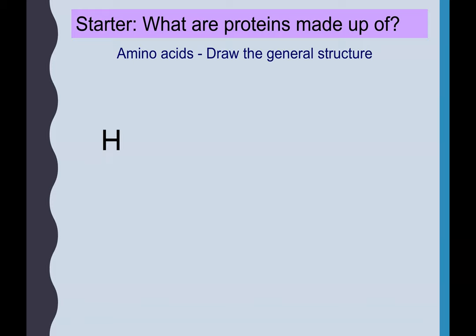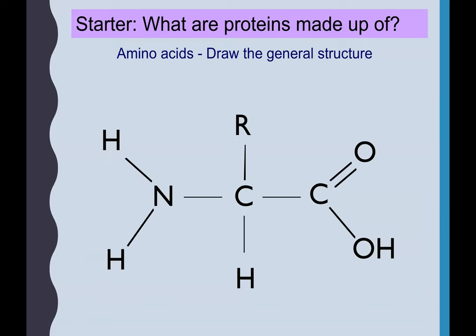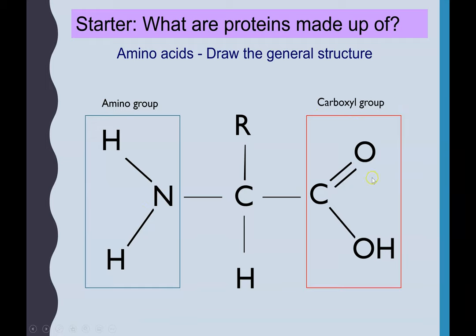If you haven't already learned it, here's the structure. We have a central carbon with four different groups coming off. So we're going to split it into those four to help you remember. Over here we have the amino group, sometimes called the amine group, with a nitrogen and two hydrogens. We also have a carboxyl group, C double bond O, and then a hydroxyl group.